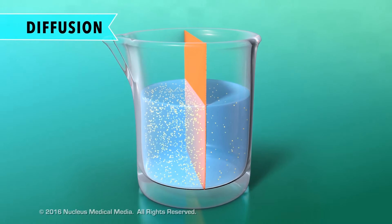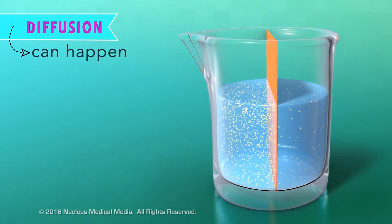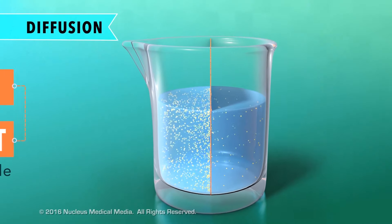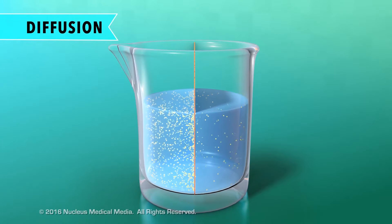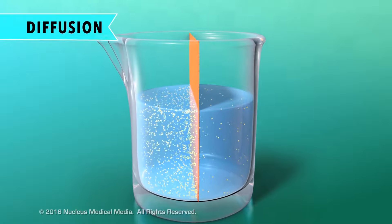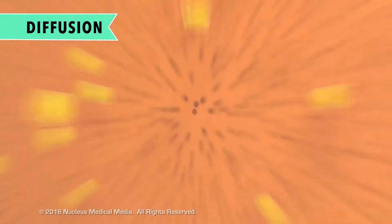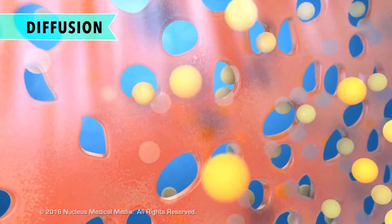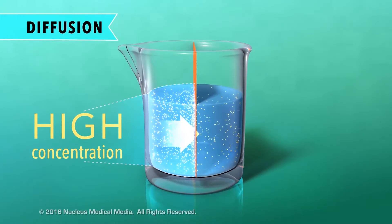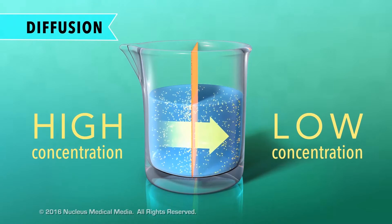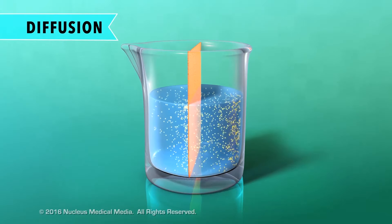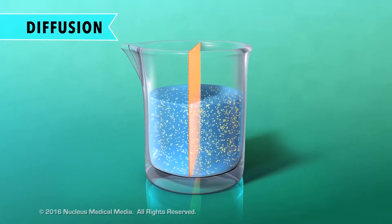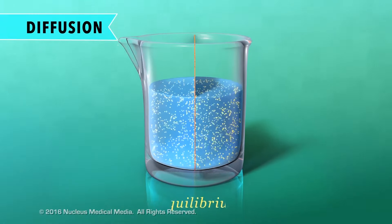It's important to note that although diffusion often occurs across the cell membrane, diffusion can happen with or without a semipermeable membrane. Right now, there is more solute on the left than there is on the right. Because solute particles are able to pass through this semipermeable membrane, they are going to naturally move from an area of high concentration to an area of low concentration. They will continue to do this until both sides of the container have about equal numbers of solute particles. This is called achieving a state of equilibrium.